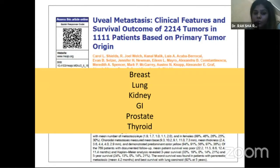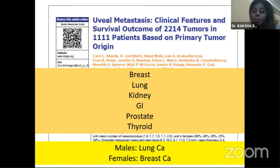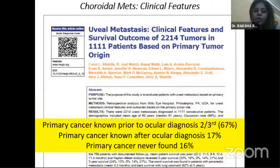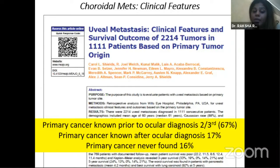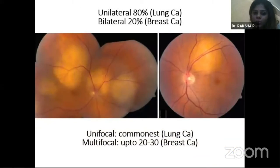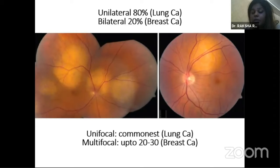Among all primary tumors that metastasize to the choroid, breast carcinoma is the most common, followed by lung carcinoma, kidney, GI, prostate, and thyroid. In males, lung carcinoma is the most common, whereas in females it is breast carcinoma. At the time of diagnosis of choroidal metastasis, the primary cancer is known in about two-thirds of patients. In about 17% of patients, the choroidal metastasis is the first symptom of any primary tumor, and in about 16% the primary cancer is never found or is cryptic. Most commonly, choroidal metastasis is unilateral and unifocal, though up to 20% can be bilateral, and 20 to 30 tumors can be found per eye in multifocal cases.